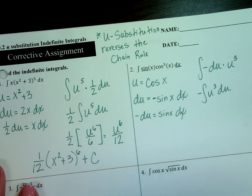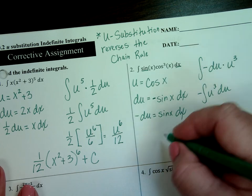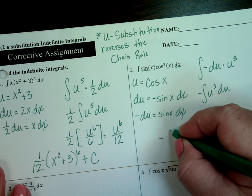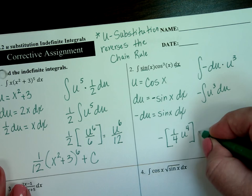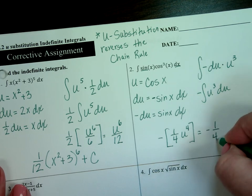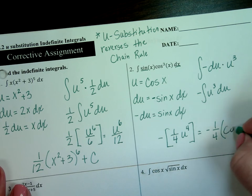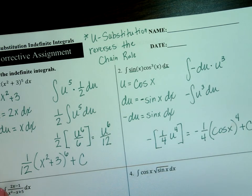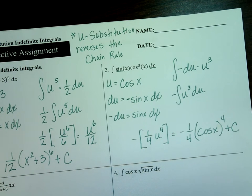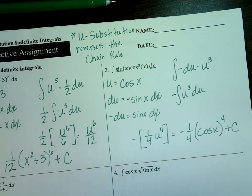Take the integral and we'll see if we match. Are we in agreement: negative one-fourth cosine to the fourth plus c?